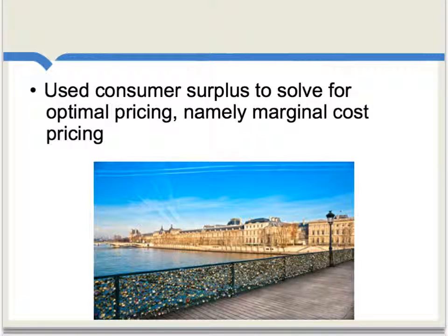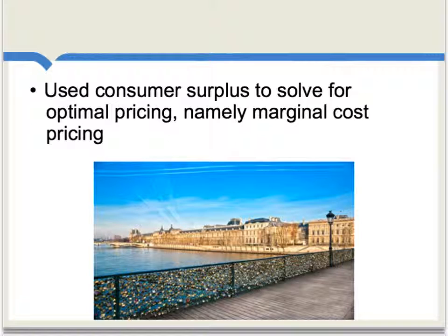Dupuis then used this idea of consumer surplus to solve for the optimal pricing of supply, and he found this would imply marginal cost pricing. For instance, if there is a bridge and the marginal cost of an extra person crossing that bridge is zero — say there's no congestion — then the optimal price for the bridge should be zero. Dupuis argued and indeed showed numerically that a price of zero in this instance would maximize consumer surplus.